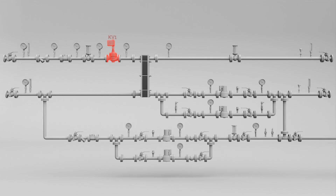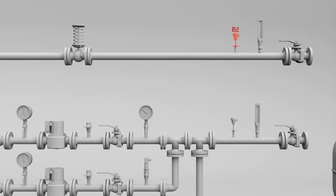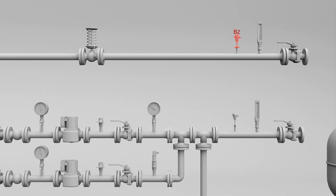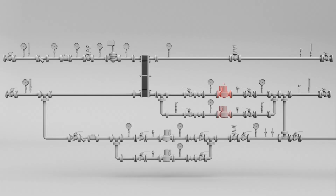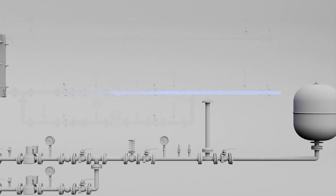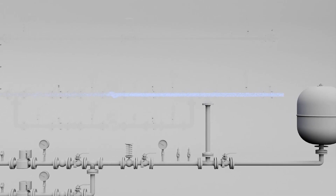First, which set points are we talking about? There is a control loop of valve KV1, where the process value comes from supply water temperature. There is also pumps 1 and 2 control loop, where the process value comes from return water temperature. As you can see, both control loops must get set points somewhere.